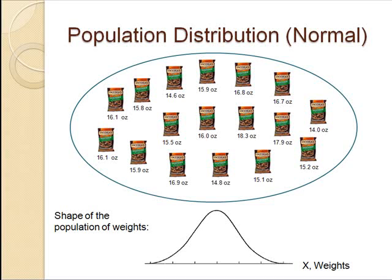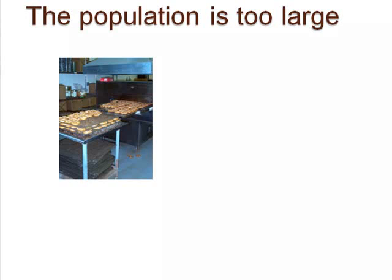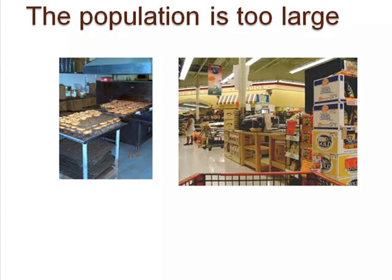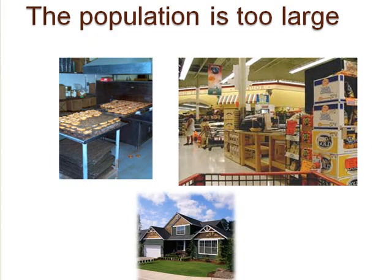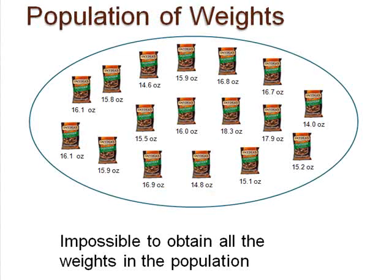Imagine all the bags of pretzels produced at all the different factories of one company across the country. At any moment, some bags are still at the factory, some are at grocery stores, and others are in people's homes, making it nearly impossible to obtain a population mean. When you thought about estimating the population mean earlier, did you remember that a way to estimate the unknown population mean is to take a sample from that population and calculate a sample mean from the number of items in that sample?